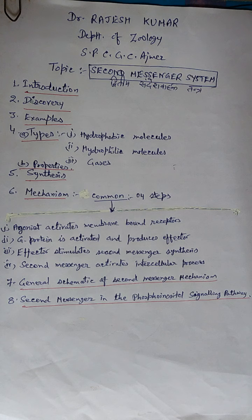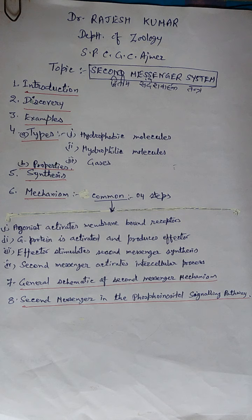Discovery of Second Messenger System: Scientist Earl Wilburne Sutherland discovered the second messenger, for which he won the 1971 Nobel Prize in Physiology or Medicine. The mechanisms of Second Messenger System were worked out in detail by Martin Rodbell and Alfred G. Gilman, who won the 1994 Nobel Prize for Second Messenger System.